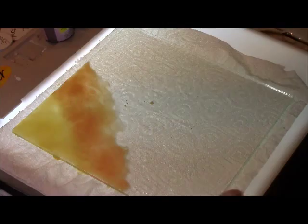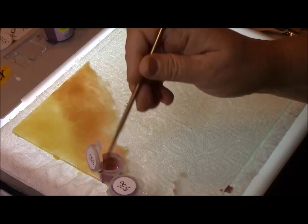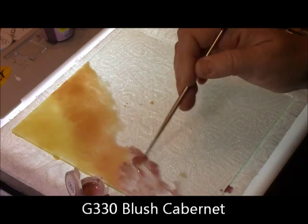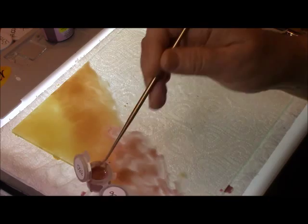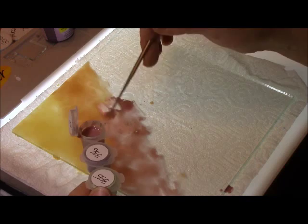The next color that I'm going to use is 330. I have it mixed in a little pod. Some of the colors that I use more often I mix up in my jar, the actual color in that jar and just leave it that way if I'm going to do a lot of backgrounds. I'm going to add the pinks, this is a pink, this is Blush Cabernet 330.